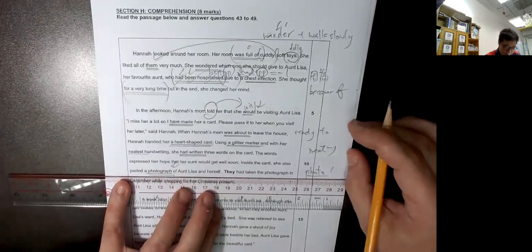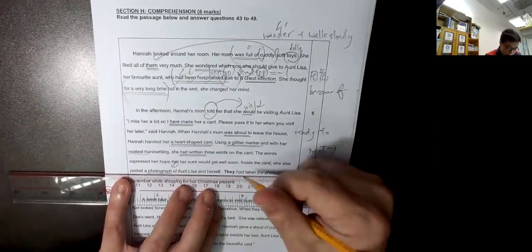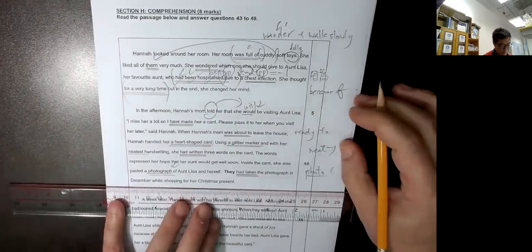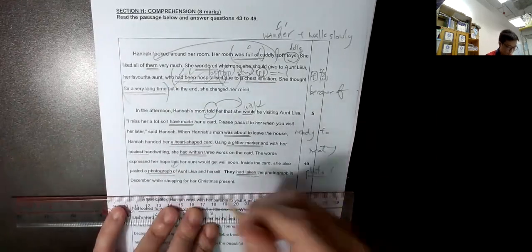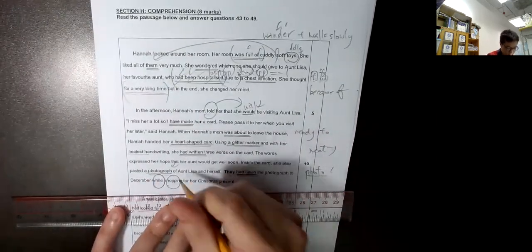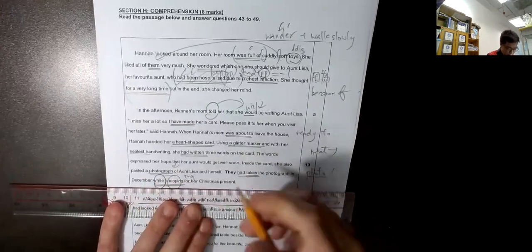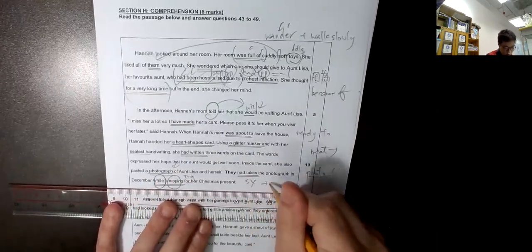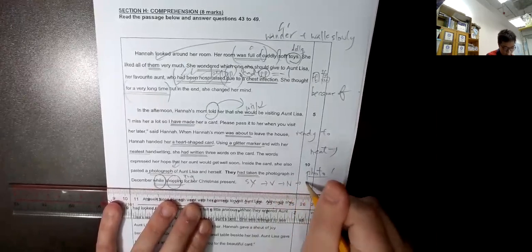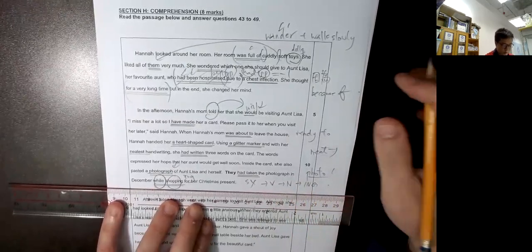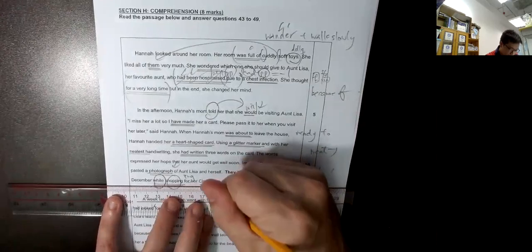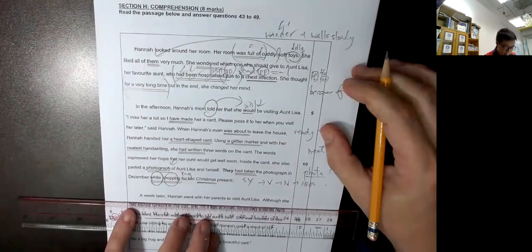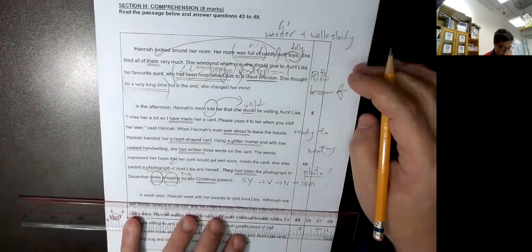Of Aunt Lisa and herself. They had taken, Past Perfect, had taken a photograph in December while shopping. 黏住腕和挖柔,記得動詞要ing. 因為個subject不見了, subject不見了, 你要將個動詞轉名詞, 那個方法就是ing. For a Christmas present, 記住Festival,大家. A week later, Hannah went with her parents to visit Aunt Lisa.